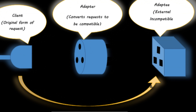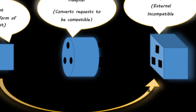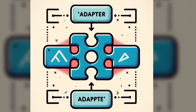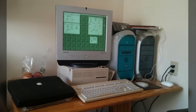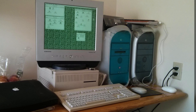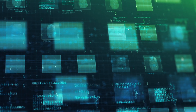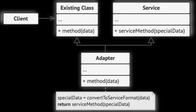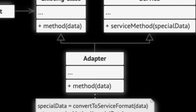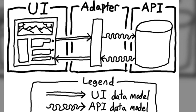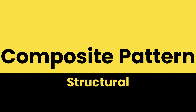In this scenario the adapter is not generating power — it is simply allowing the incompatible American socket to connect with the European socket. Technically, think of it like having an old database system where a new application uses a different interface. An adapter can be created to allow the new application to interact with the old database using its current interface. Use this pattern when an existing class's interface doesn't match what you need.